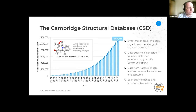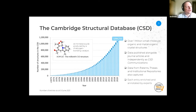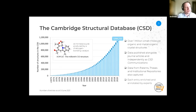We also try to get data from other places such as patents, theses, and institutional repositories. An important facet of this is that we have a team of expert structural chemists who review the structures that get deposited with us to make sure they are fit for reuse. That's an important part of enabling downstream reuse, but I'm going to talk about what we do to enable researchers upfront to get their data into a state where it's FAIR when they actually deposit it.